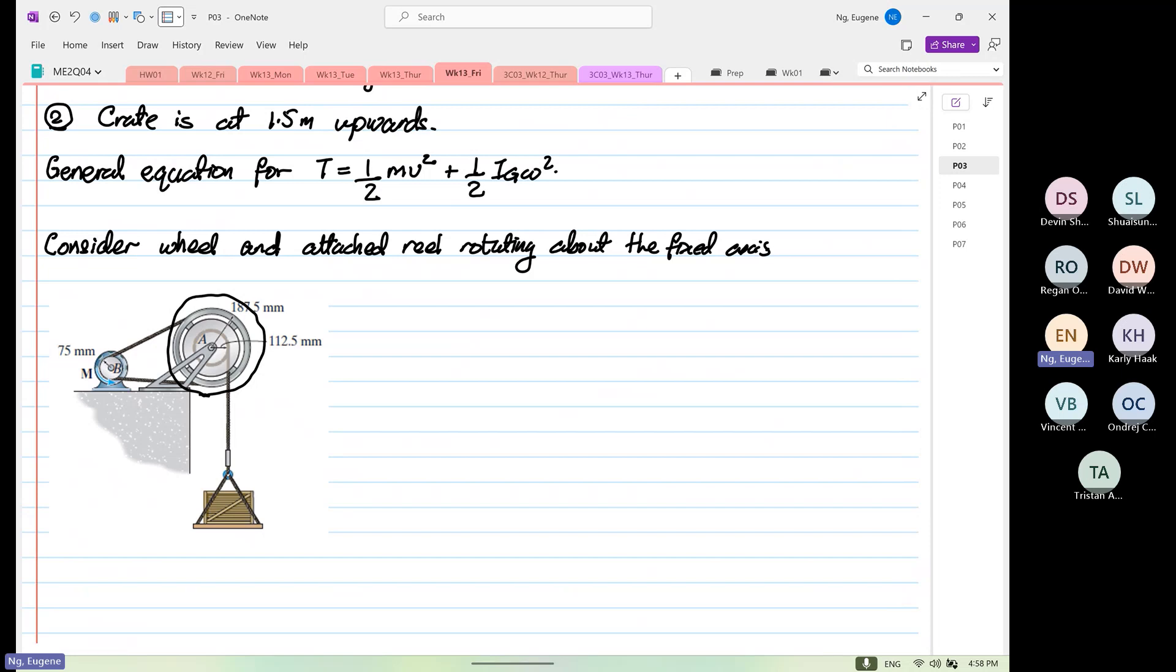So we are going to formulate T2 which is kinetic energy when the displacement, when the mass is moving upwards. So the first thing we know is IG is equal to MK squared.